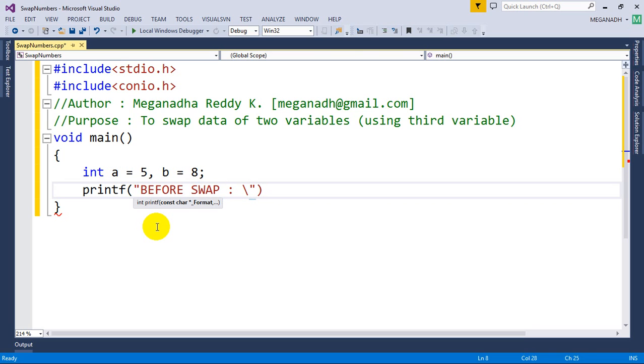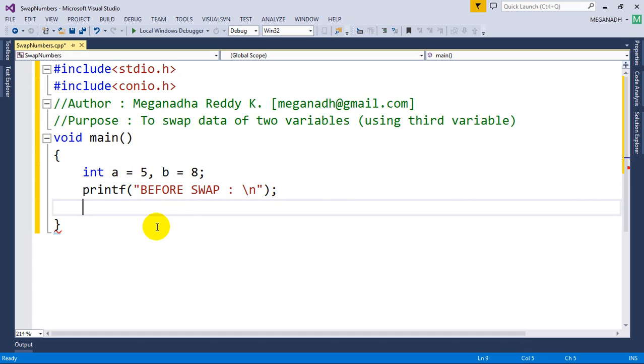So just I want to print the values of a and b before swapping. Okay, now if I want to print it like printf a is equal to percent d comma b is equal to percent d, right. So in case of a I want to print, b I want to print first and that's it.